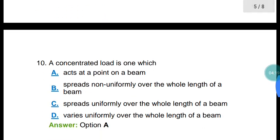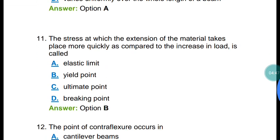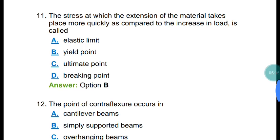Question number ten: A concentrated load is one which acts at a point on a beam. Uniformly distributed load spreads uniformly over the whole length, while a uniformly varying load varies uniformly over the length. Question number eleven: The stress at which the extension of a material takes place more quickly compared to the increase in load is called the yield point.